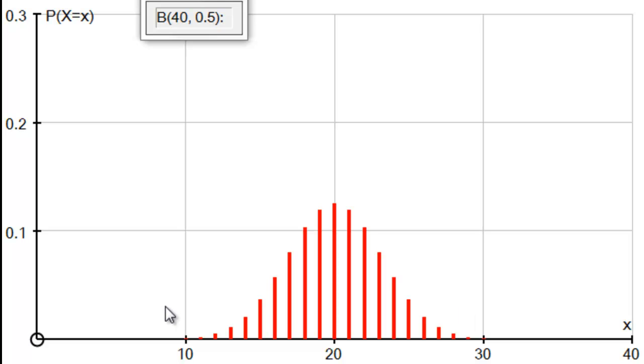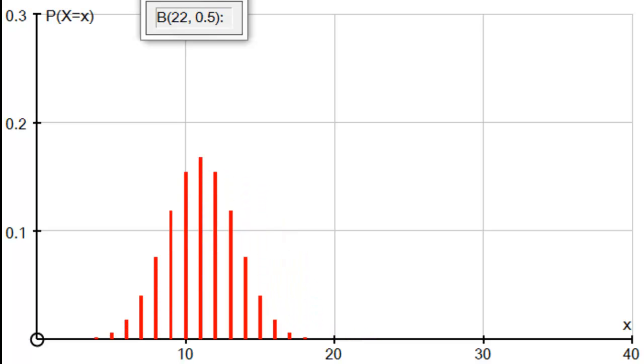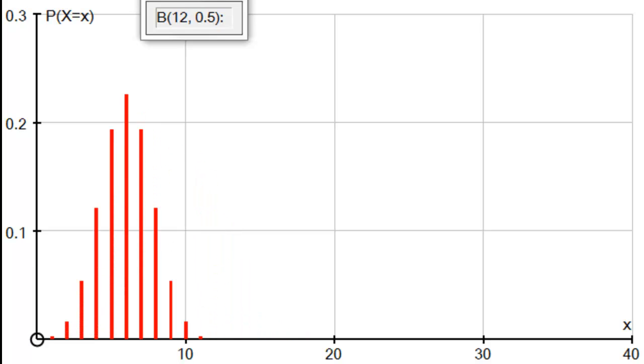So what are these conditions that allow a binomial to approximate to a normal? Well, let's keep p at 0.5 and start to reduce n. Keep looking at this number here and how the distribution changes. We'll start reducing it, and you can see the distribution still remains symmetrical. Let's reduce it a bit more. We're down to n equals 12, and it still is symmetrical and takes on a normal distribution shape.